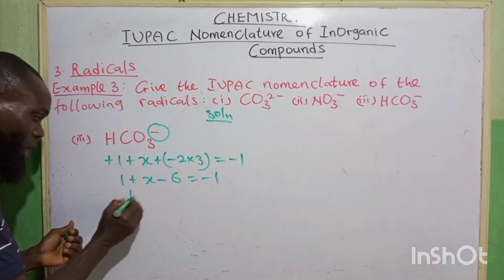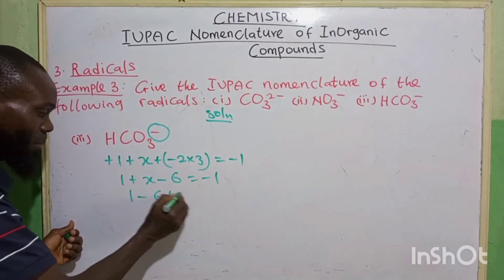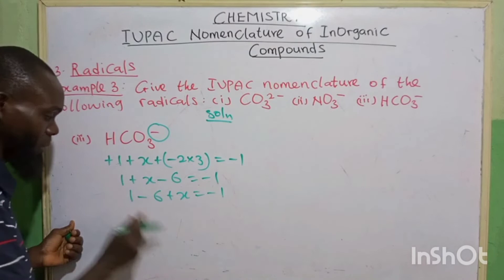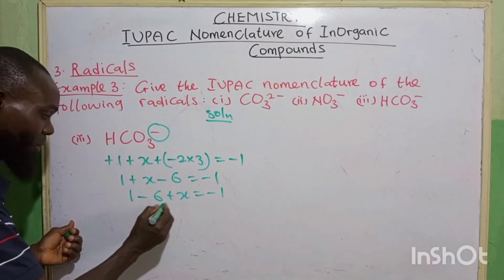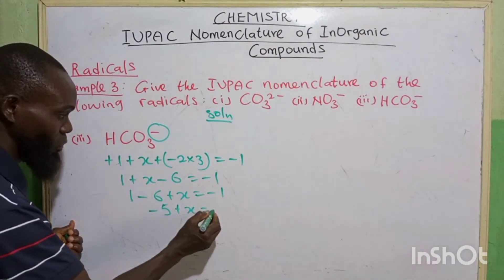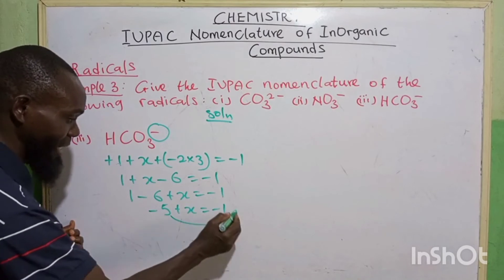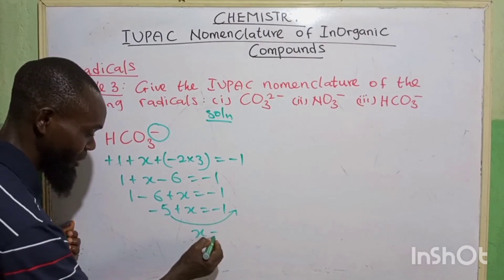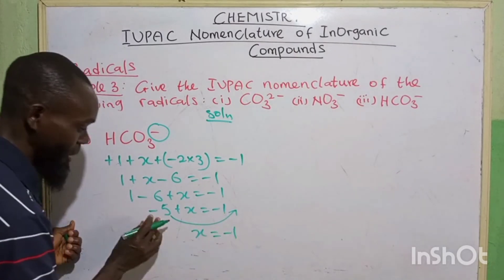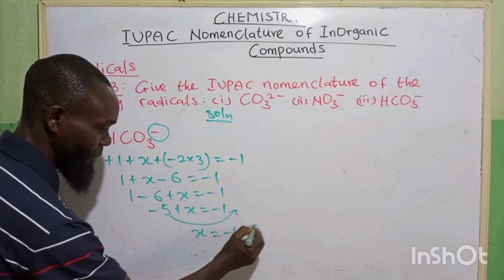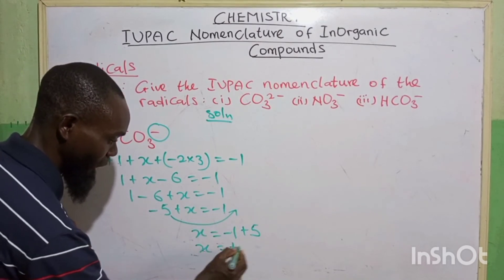Collect like terms. 1 minus 6 plus X is equal to minus 1. 1 minus 6, we have minus 5 plus X is equal to minus 1. So collect like terms. So we have X is equal to minus 1. When minus 5 crosses, it changes to plus 5. So X is equal to plus 4.